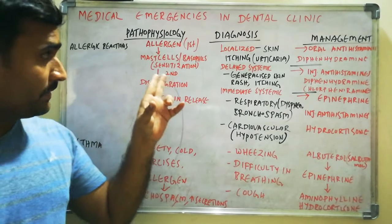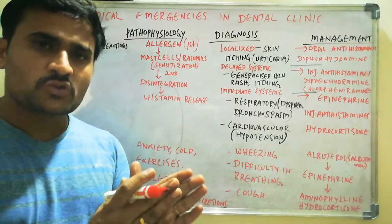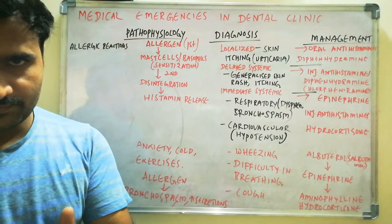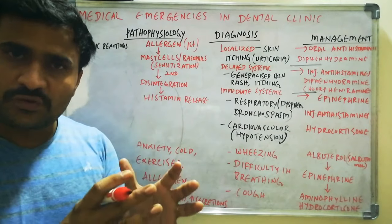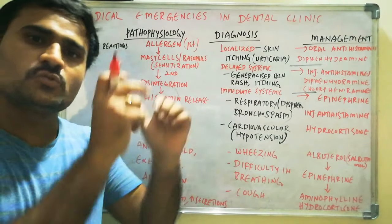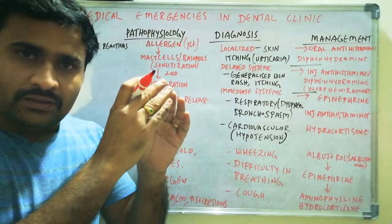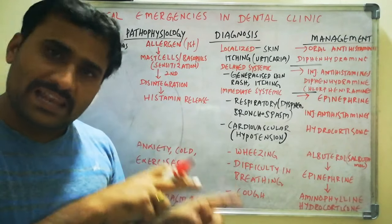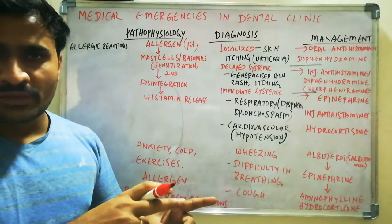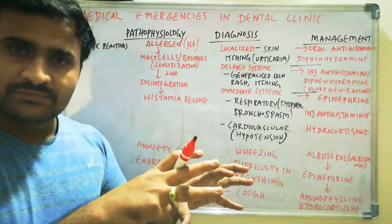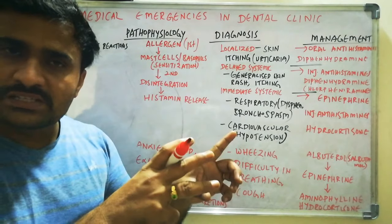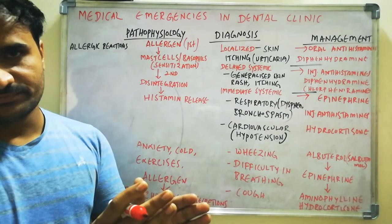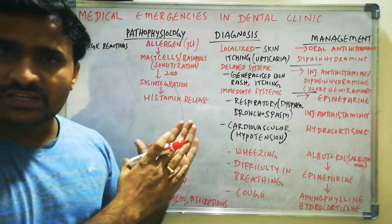Next is allergic reactions. When a first dose of allergen — food or drug — is exposed, the mast cells and basophils get sensitized. The first dose triggers no reaction. But on subsequent exposure, the already-sensitized mast cells and basophils disintegrate and release massive amounts of histamine, causing the allergic reaction.